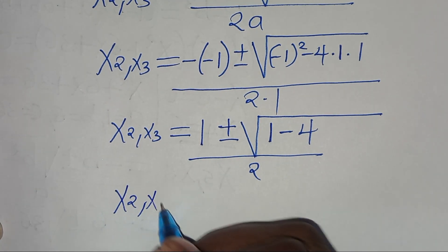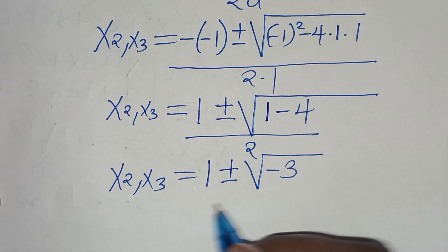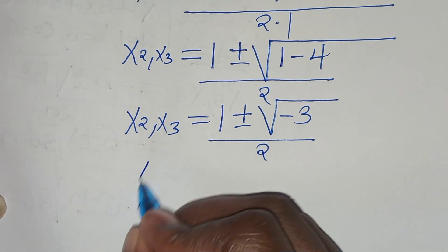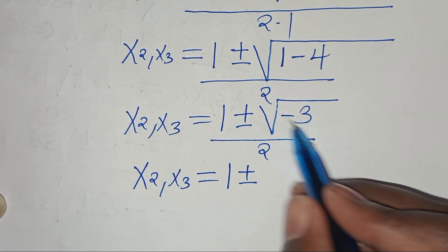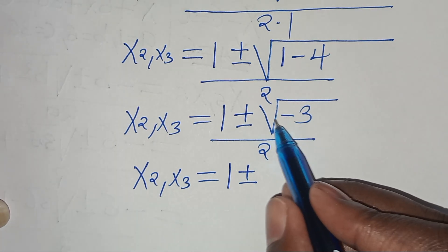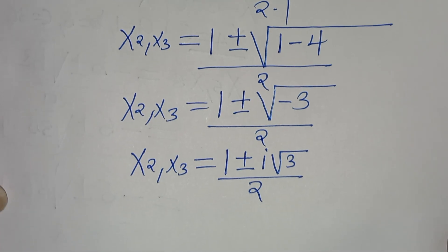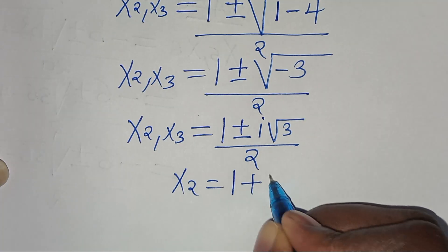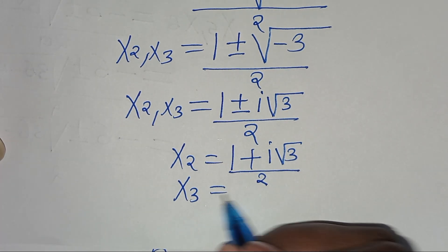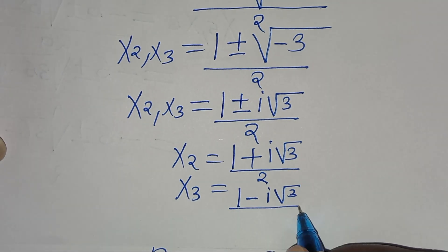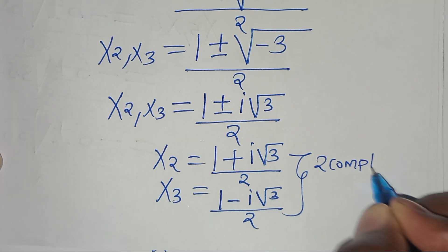So x₂ and x₃ is equal to 1 plus or minus the square root of 1 minus 4, which is minus 3, divided by 2. We can express the square root of minus 3 as the square root of minus 1 times 3, and the square root of minus 1 is i, so this gives i square root of 3, everything divided by 2. So x₂ is equal to 1 plus i square root of 3 divided by 2, and x₃ is equal to 1 minus i square root of 3 divided by 2. These are two complex solutions in case 1.